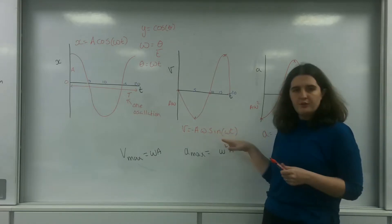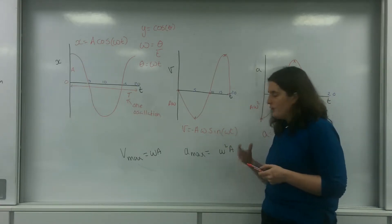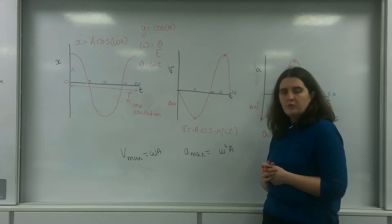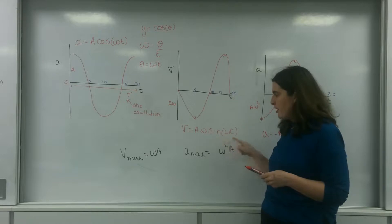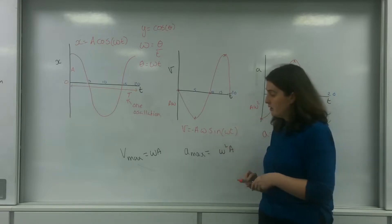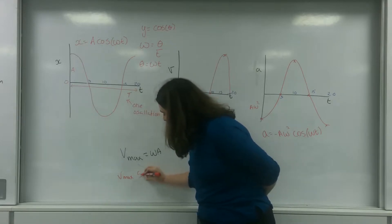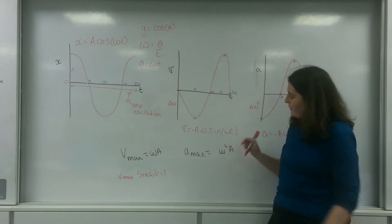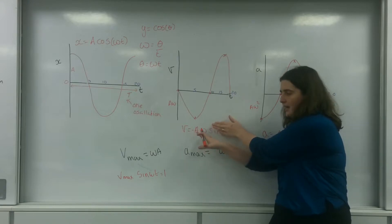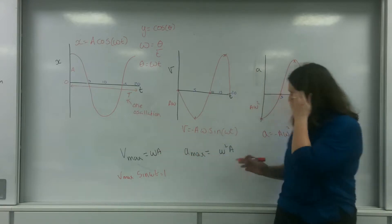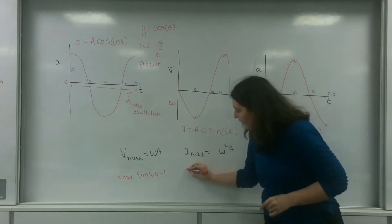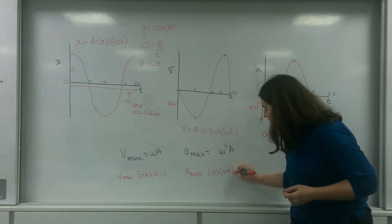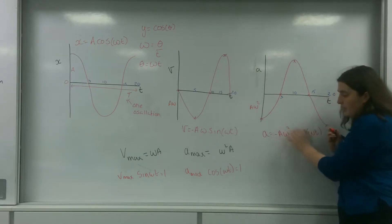This is the formula for velocity, and it is maximum when you look at sine. If you put it into your calculator, sine will go from 0 to 1. So velocity is maximum when sine omega t equals 1, and therefore all you are left with is A omega — that is the formula on your datasheet. The same is true for acceleration: it is maximum when cos omega t equals 1, so if that equals 1, that's what we're left with. Because we're only looking at the magnitude, I don't care about the negative sign.